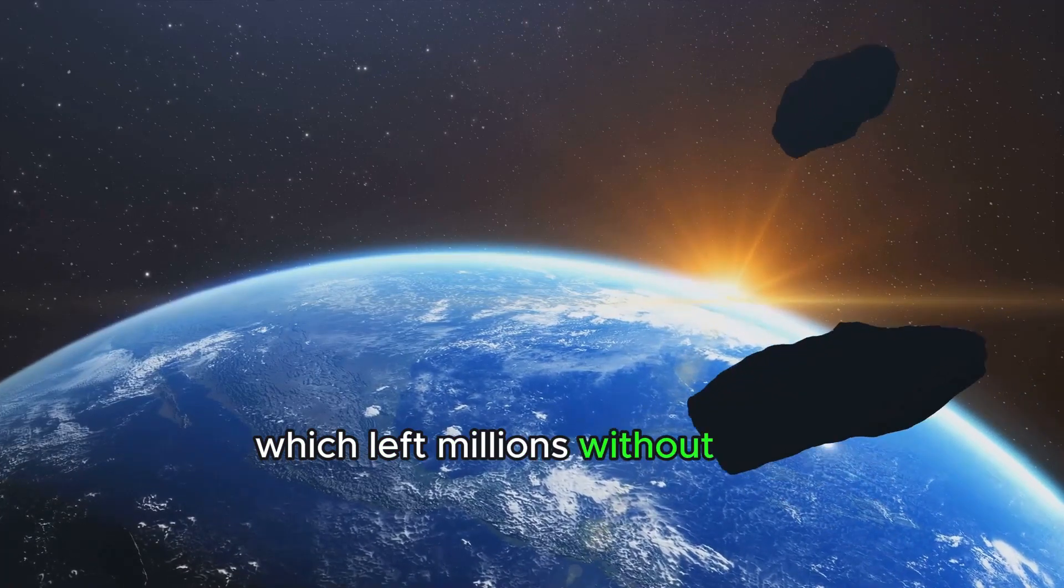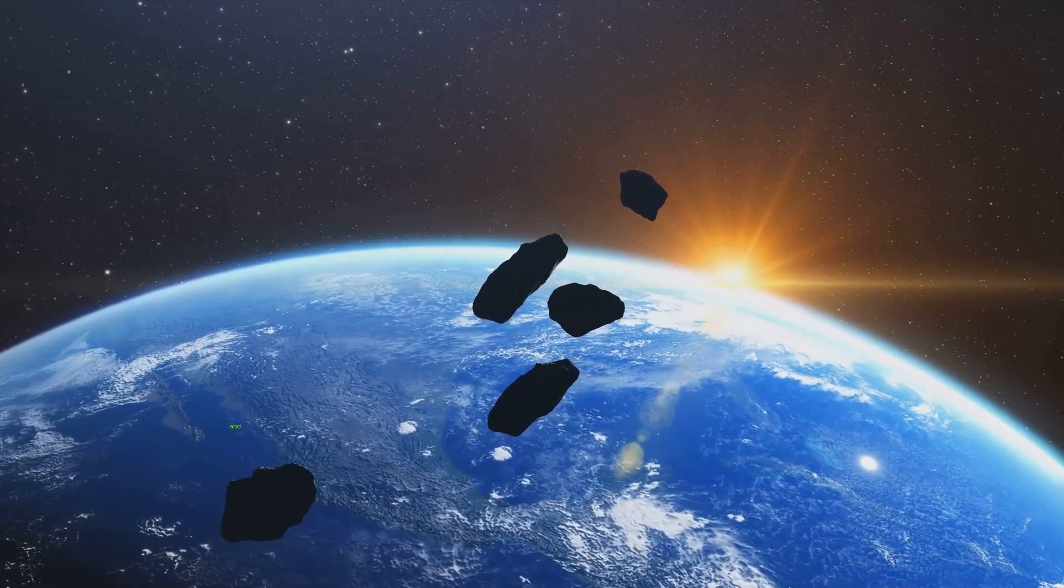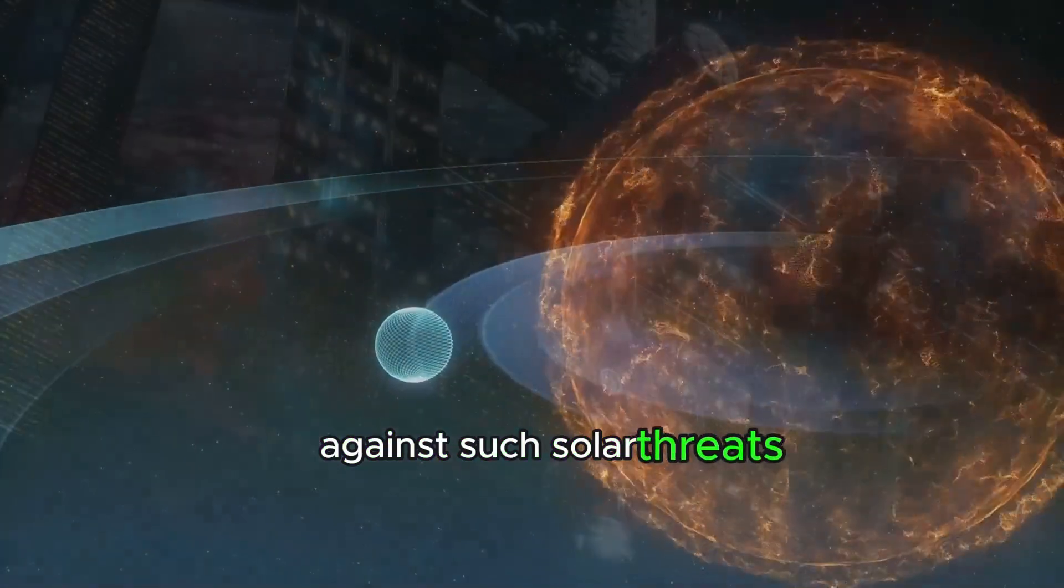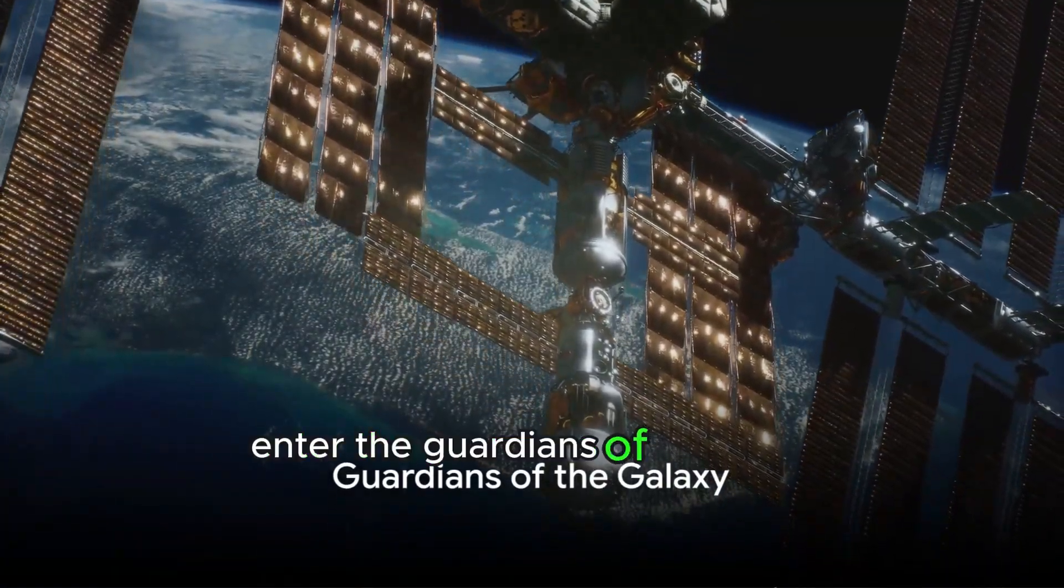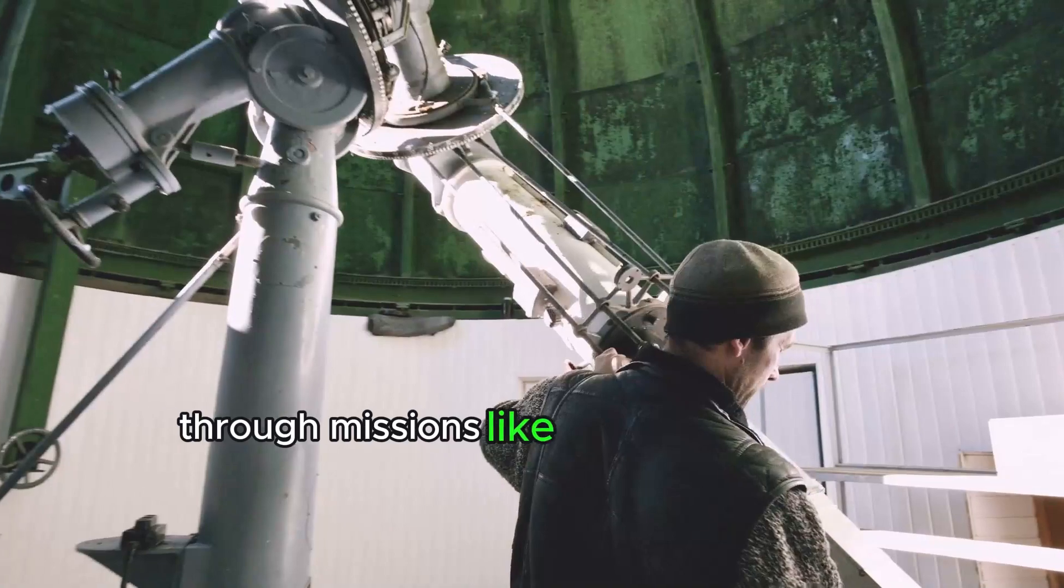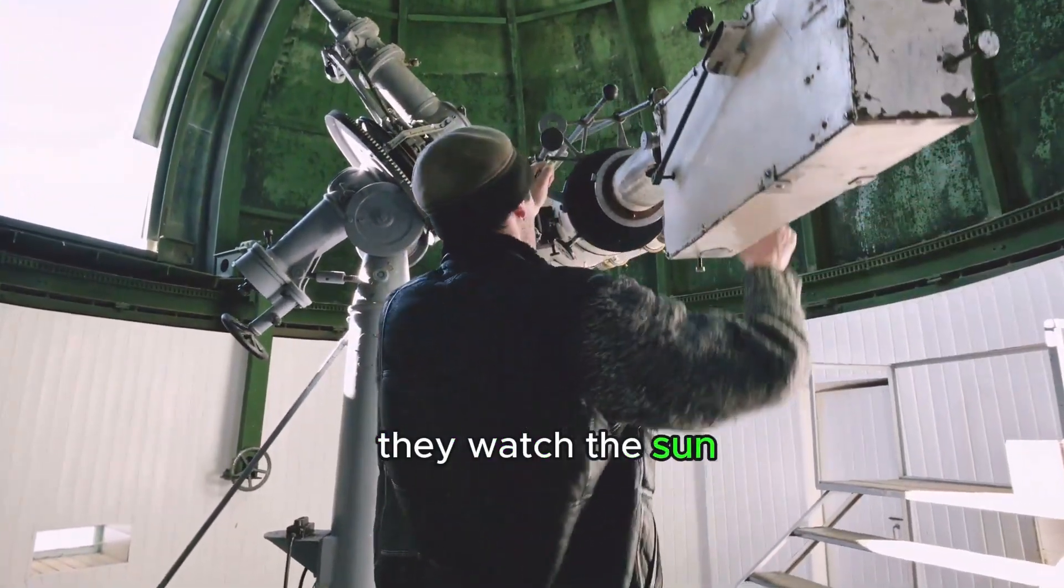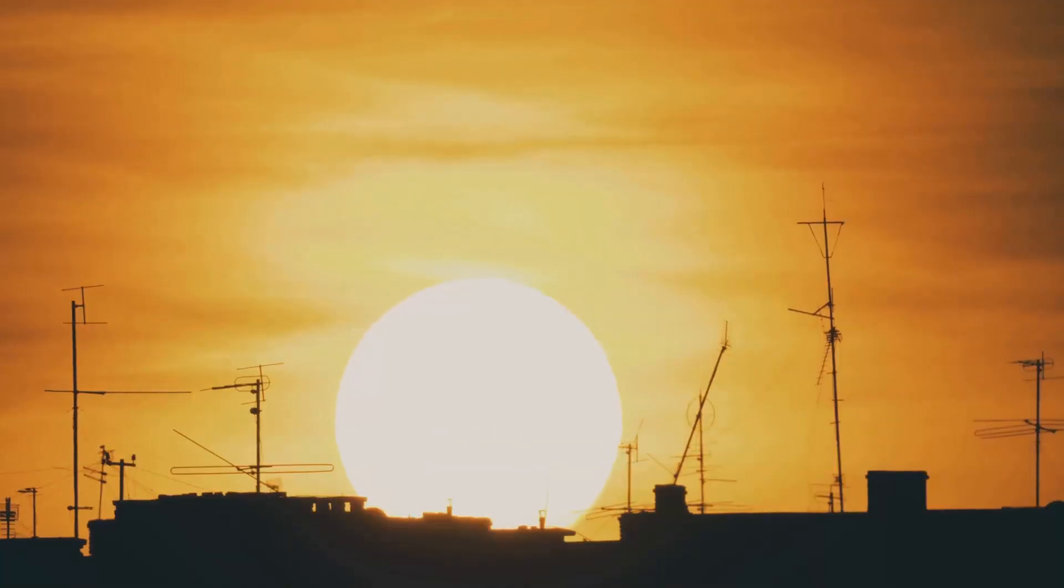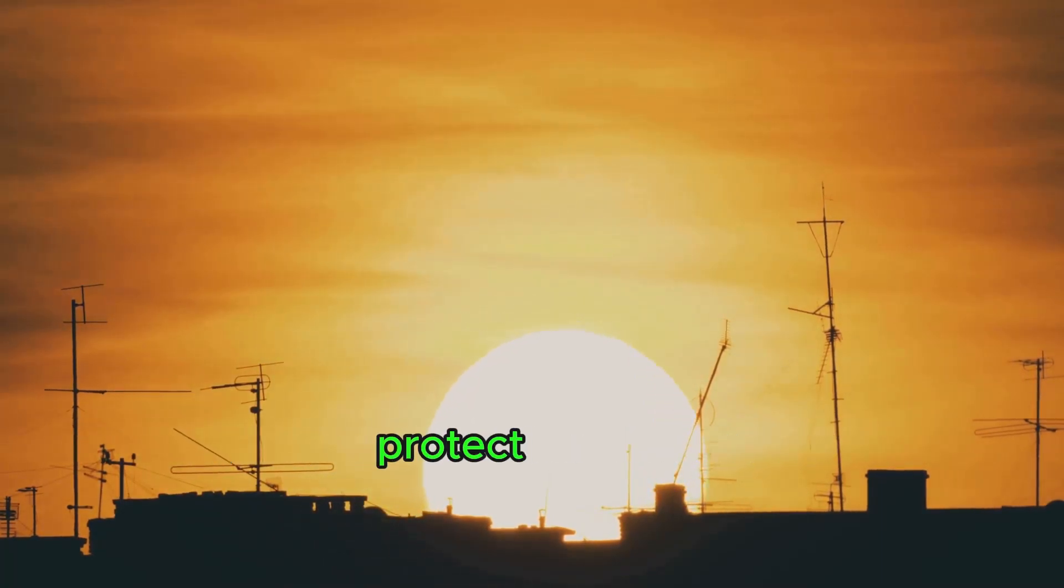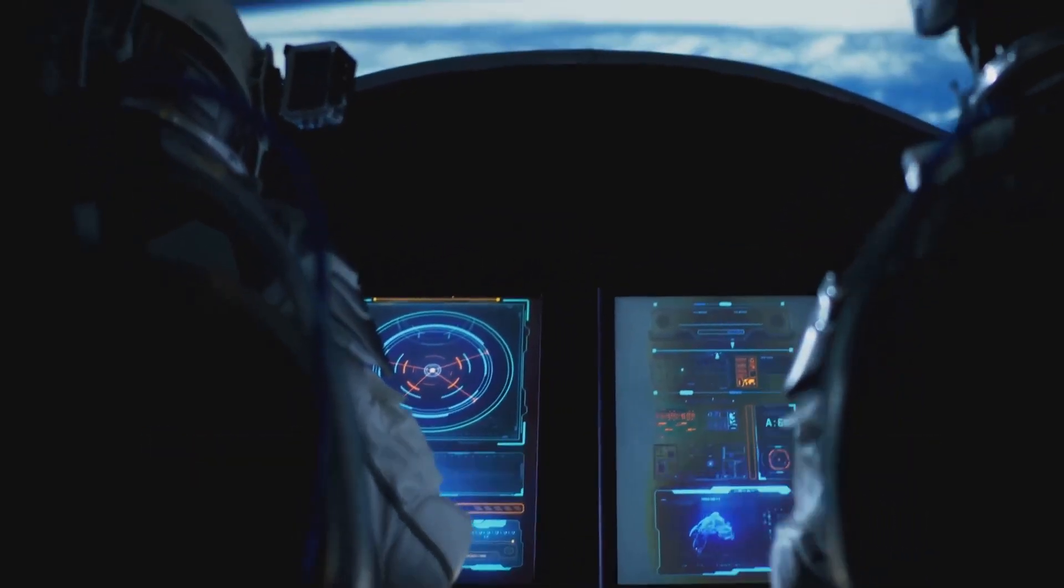Which left millions without power, serving as a stark reminder of the vulnerability of our systems and signaling the urgent necessity for preparedness against such solar threats. Enter the guardians of our galaxy: NASA and the Indian Space Research Organization. Through missions like the Solar Dynamics Observatory and Aditya L1, they watch the Sun, seeking to understand its whims. By studying the Sun, we learn to anticipate its storms, giving us the precious time needed to protect our planet. These missions are our early warning system, a crucial line of defense for our technological society.